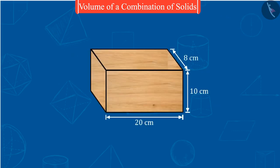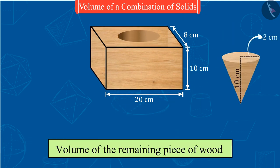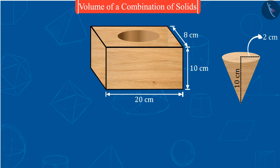Come, let's see one more situation of combination of solids. Suppose we have this piece of wood from which we have to take out a conical piece of radius 2 centimeters and height 10 centimeters. Can you find out the volume of the remaining piece of wood in the same way? Absolutely correct.